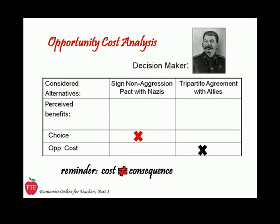Remember the warnings in Part 1 about confusing opportunity cost and consequence, and about the forward-looking orientation of economics versus the backward-looking orientation of history? It's clearly in play here, because everybody knows the Nazis eventually violated the Non-Aggression Pact and invaded Russia. With that knowledge of outcomes — not costs — it's easy to jump to the conclusion that Stalin made a poor decision, or, as my sophomore history students often said, that Stalin was dumb. But using opportunity cost analysis forces us to step back into his shoes — and this analysis should reframe your conclusion to: Stalin was dumb alright, dumb like a fox.